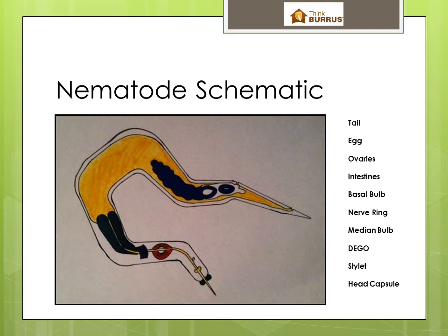We talked about the tail and reproduction. The ovaries on the female are, of course, where the eggs come from. A female is typically fertilized once and uses stored sperm for the most part. A male mates a time or two, and then it dies. These things don't have a long life for the most part — it's just not a very glorious existence.